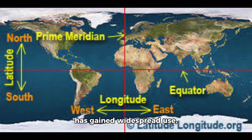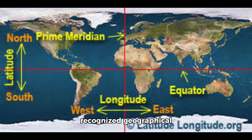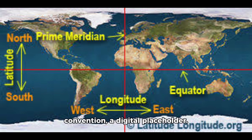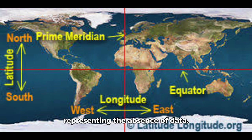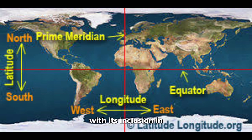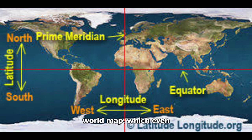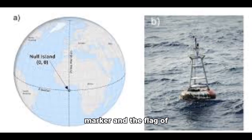While the name Null Island has gained widespread use, it's not an officially recognized geographical feature in the traditional sense. It's a cartographic convention, a digital placeholder. The name itself plays on the concept of null values in computer science, representing the absence of data. The island's fictional existence was solidified with its inclusion in OpenStreetMap, a collaborative open-source world map, which even jokingly depicts it with a one-meter-square island marker and the flag of Null Island.